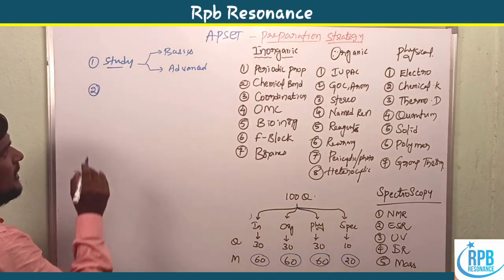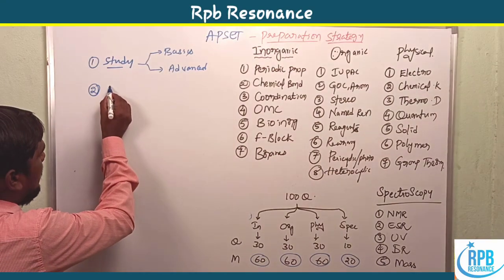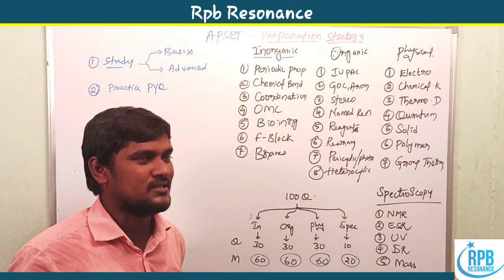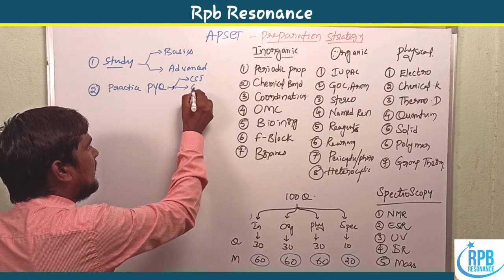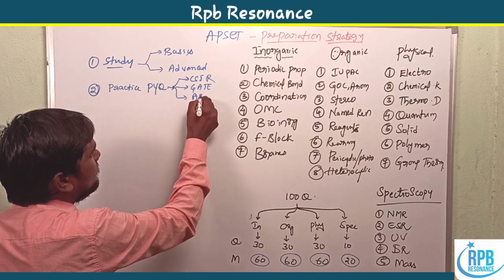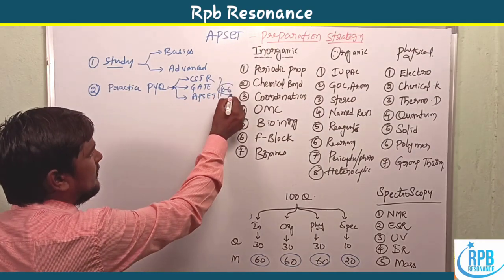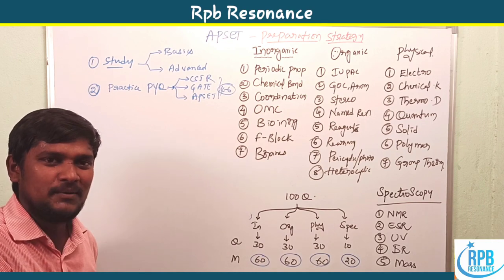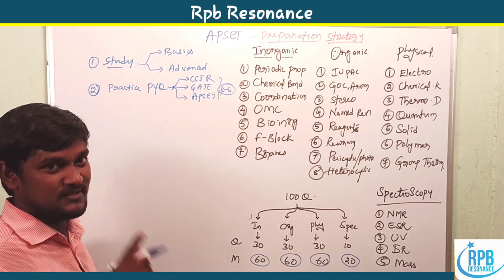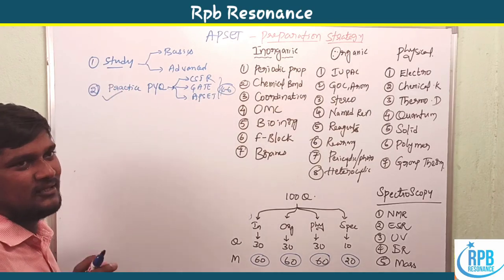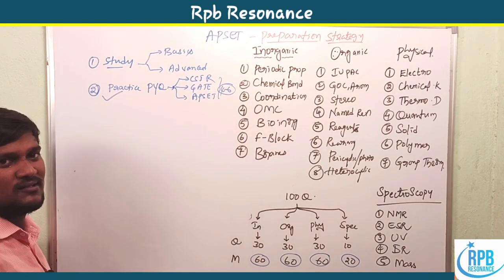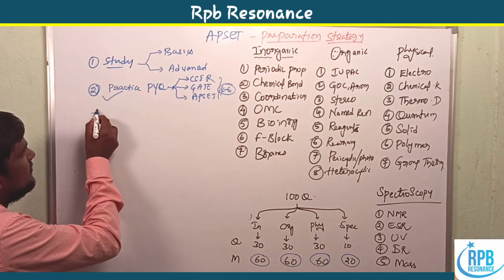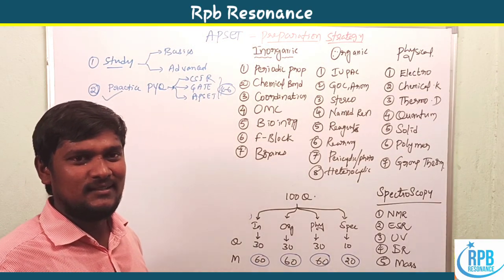After completing your study, focus on practicing previous year questions (PYQ). Practice previous year papers from CSIR, GATE, and AP SET — a minimum of four to six years each. You should practice previous year questions after completing each and every topic. Many students don't practice enough and that is why they fail to qualify even after multiple attempts.